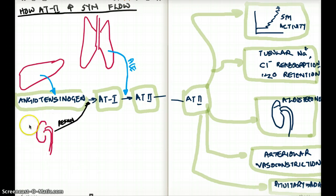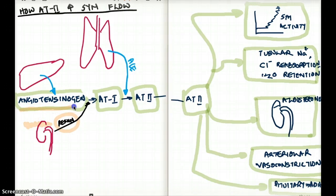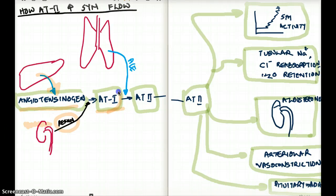When there is less blood flow in the kidney, the kidney releases something called renin. Renin is going to convert angiotensinogen to angiotensin I, and angiotensinogen is secreted from the liver. Angiotensin I is then converted to angiotensin II by using the enzyme ACE, and this process takes place in the lungs.